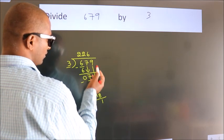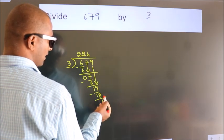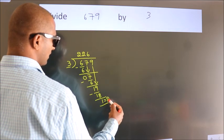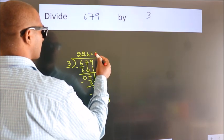After this, no more numbers to bring it down. So we stop here. This is our remainder. This is our quotient.